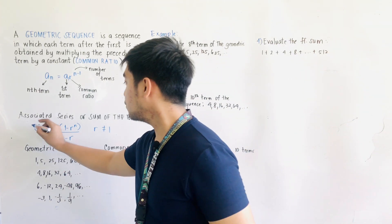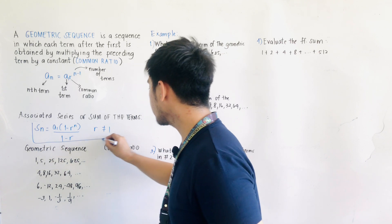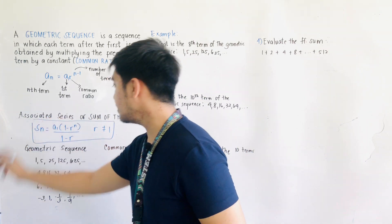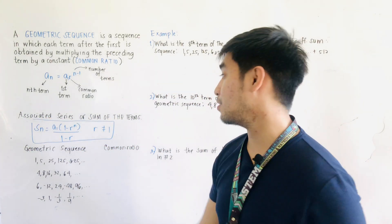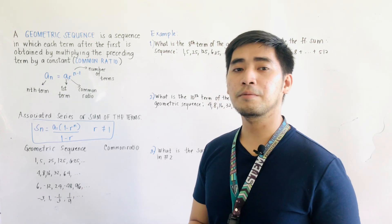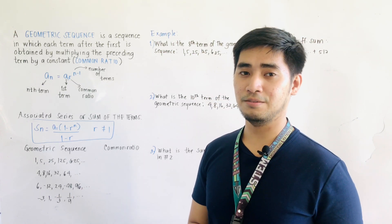Again, the formula for the associated series or sum of the terms is SN is equal to A1 times 1 minus R raised to N over 1 minus R, where R should not be equal to 1.